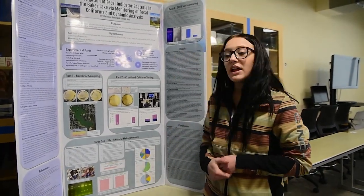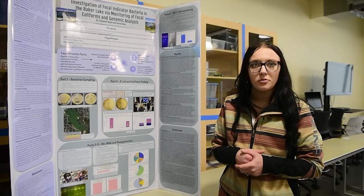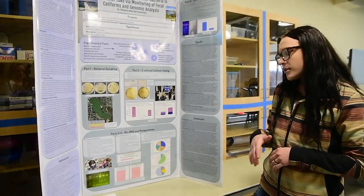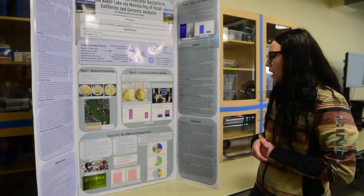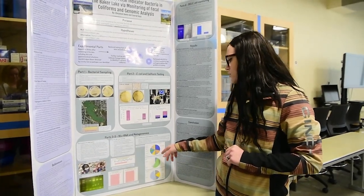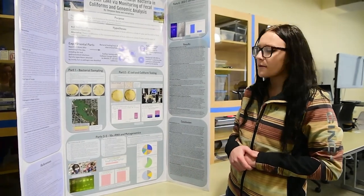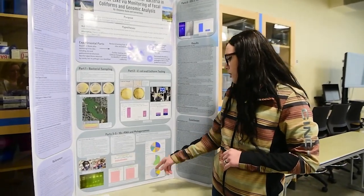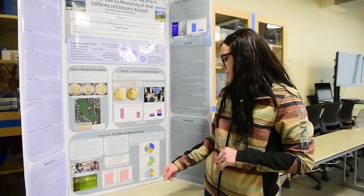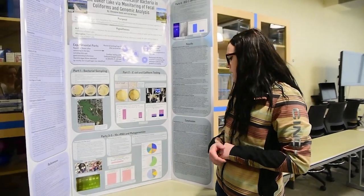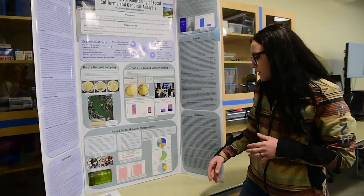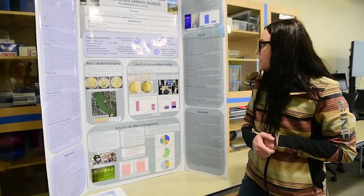We also performed Illumina sequencing with metagenomics. Our biggest finding was Cupriavidus pauculus. For pathogens, Flavobacterium showed the highest rate. Additionally, Proteobacterium was identified as another potential pathogen of concern.